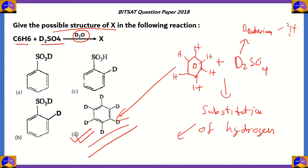Options A, B, and C occur during sulfonation, where benzene must be heated with sulfuric acid. Since there is no heat here — only heavy water and D₂SO₄ — this forces the hydrogen to be substituted by deuterium. Therefore option D is the correct option.